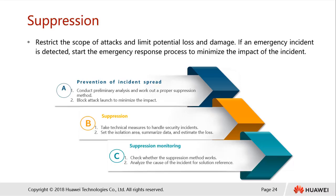Blocking the attack launch can be handled from the firewall or router — we can perform blacklisting or filtering for certain targets or attack types. Further suspension steps include taking technical measures to handle the security incidents, setting up an isolation area, summarizing data information, and estimating losses. Finally, suspension monitoring is performed to counter-check whether the suspension is working successfully. We analyze the reasons behind the incidents and document them for future reference.